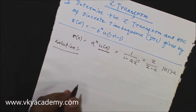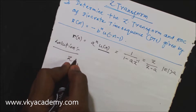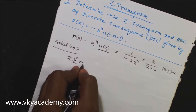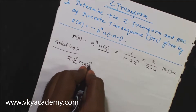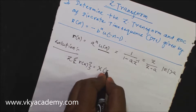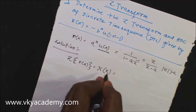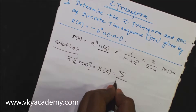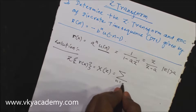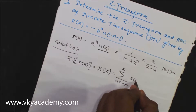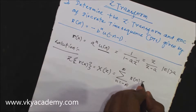We know from the Z-transform definition: the Z-transform of x(n) is X(z) = summation from n = -∞ to ∞ of x(n) z^(-n).